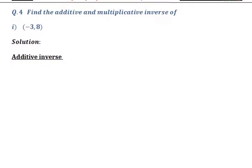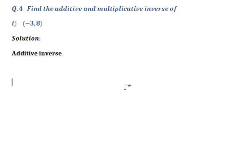For additive inverse — suppose we have the number 4, so the additive inverse of 4 is minus 4. It means simply a number that when added to a given number gives 0. That's why additive inverse of 4 is minus 4, because when we add them we get 0.